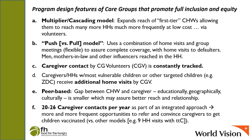Men, mothers-in-law, and other influencers can be reached in the household. The caregiver contact by Care Group volunteers is constantly tracked so you can know if they're actually having the coverage they need to be having. The caregivers and households with the most vulnerable children, or other targeted children like zero-dose children, can receive additional home visits by the Care Group volunteer. It's peer-based. The gap between the community health worker and the caregiver — educationally, geographically, culturally — is smaller, which may assure better reach and relationship.